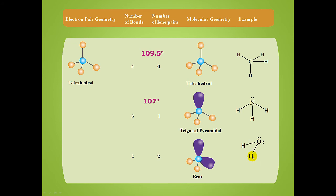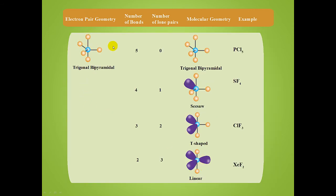When we have a tetrahedral electron pair geometry but two of those charge clouds are lone pairs — as in the case of water — two lone pairs compress the bond angle even more. So it's less than 109.5 degrees; for this bent molecular geometry, the bond angle is 104.5 degrees. So when you have a tetrahedral electron pair geometry with a central atom bonded to two atoms and two lone pairs, you have a bent geometry.